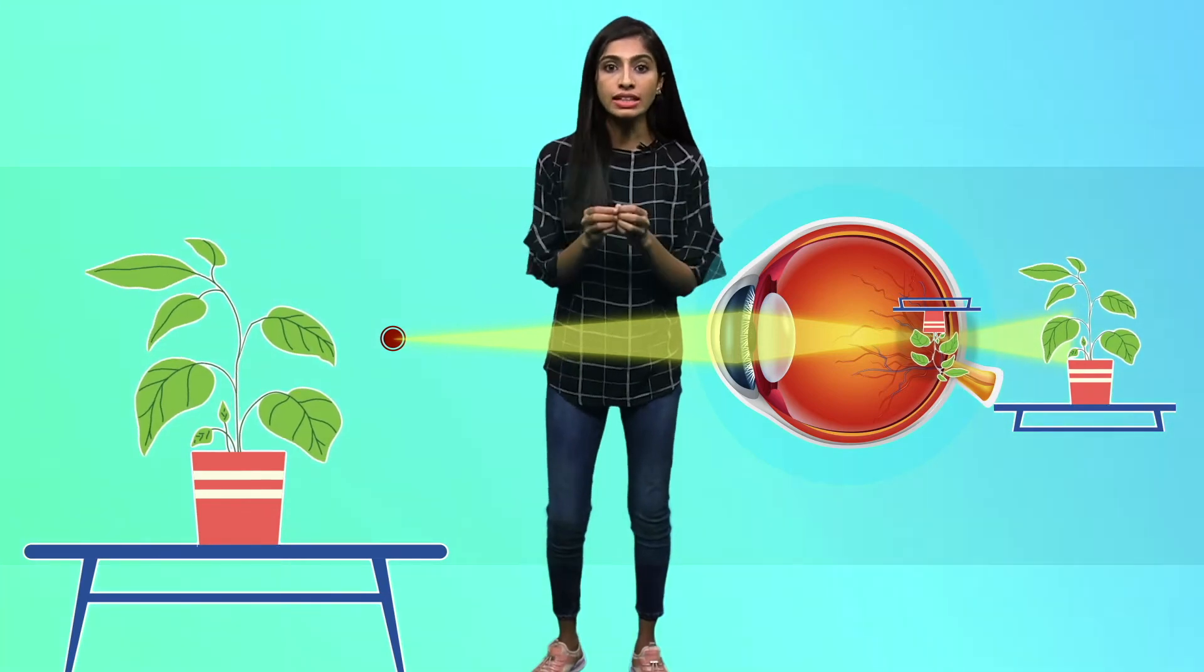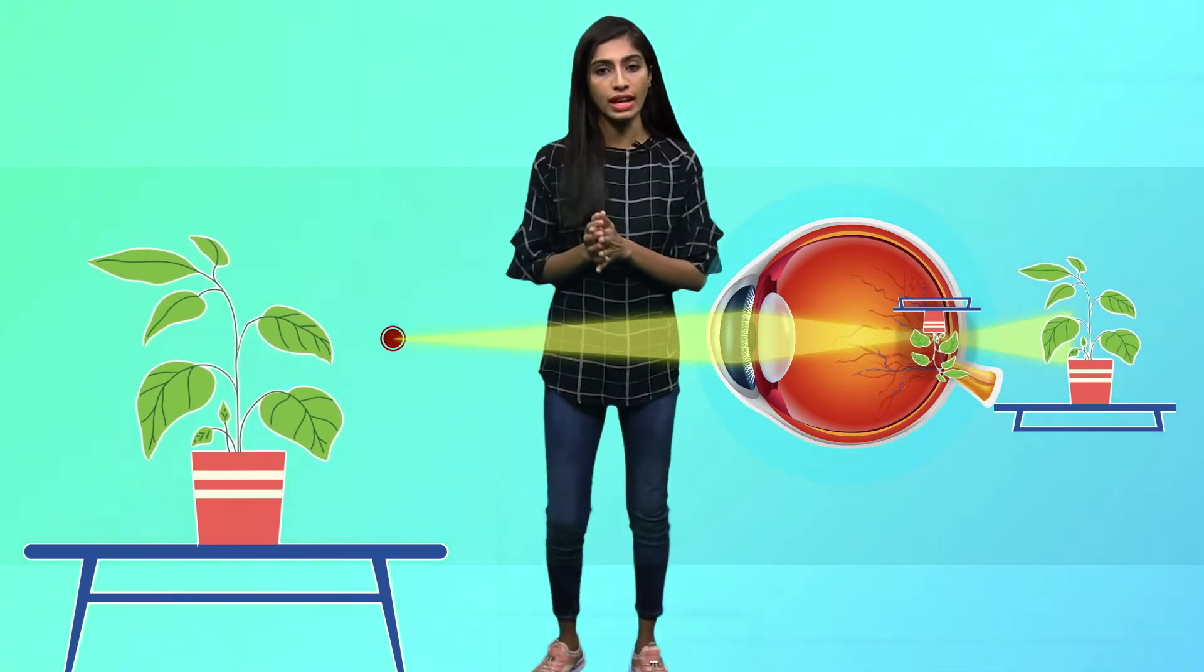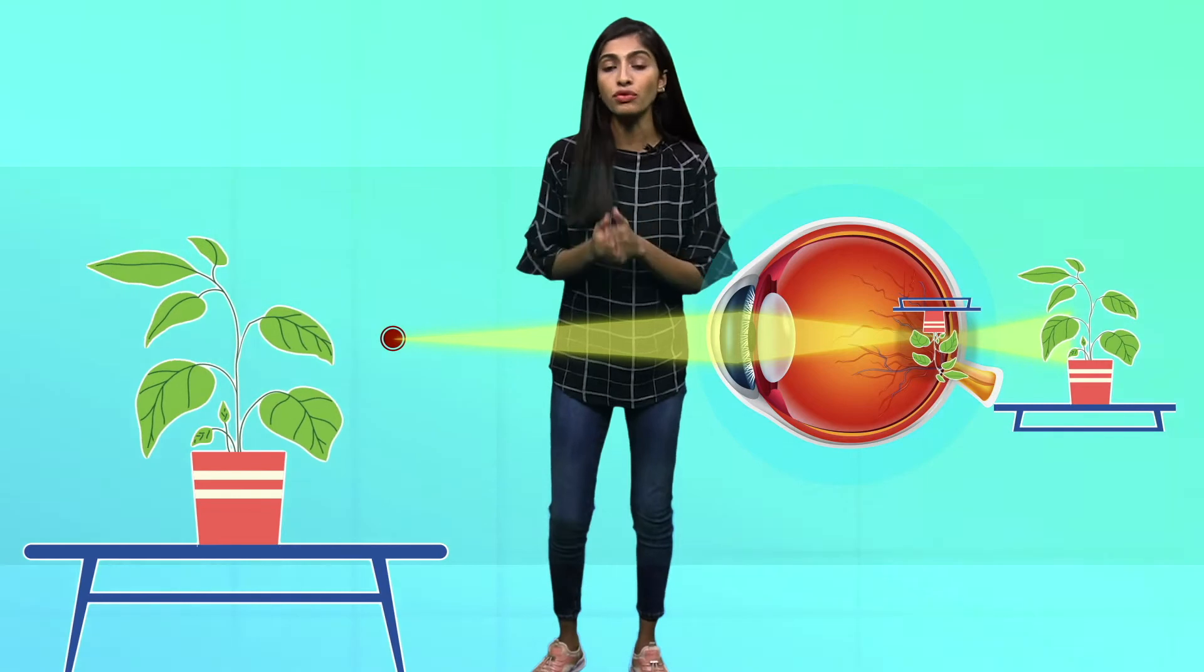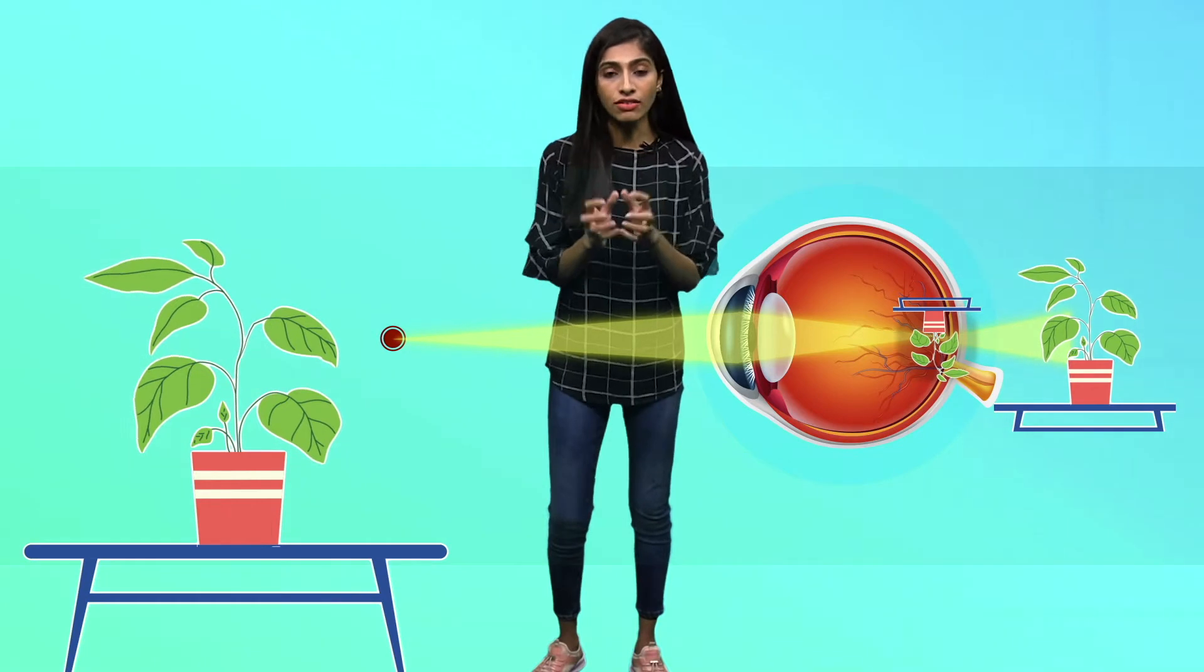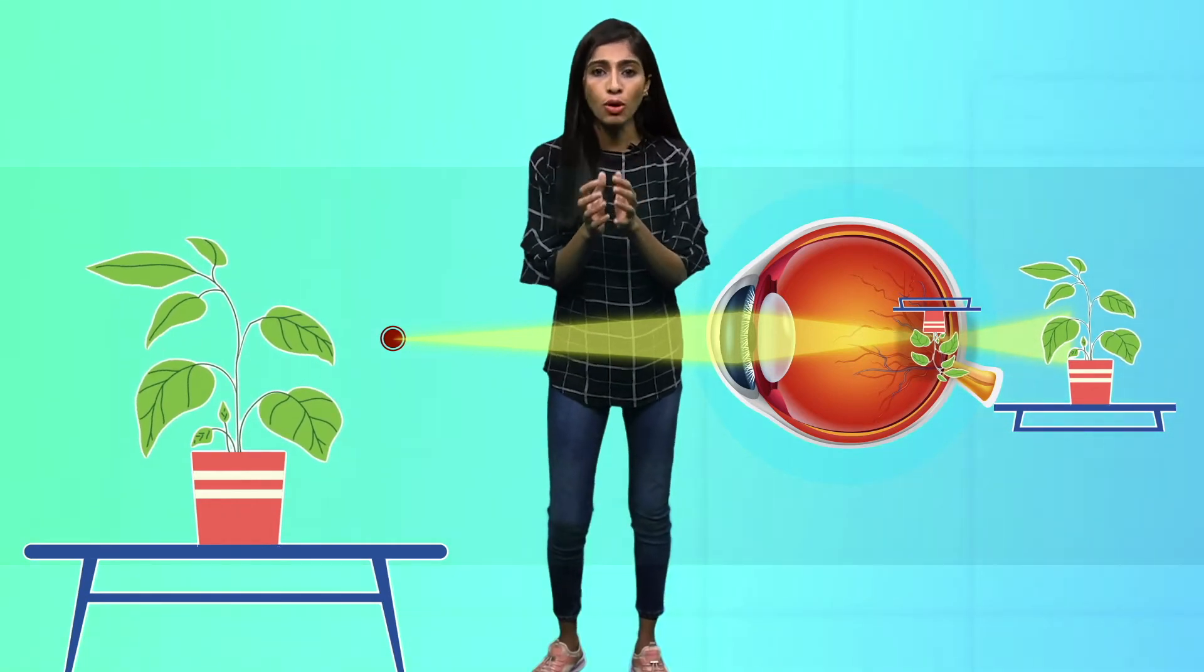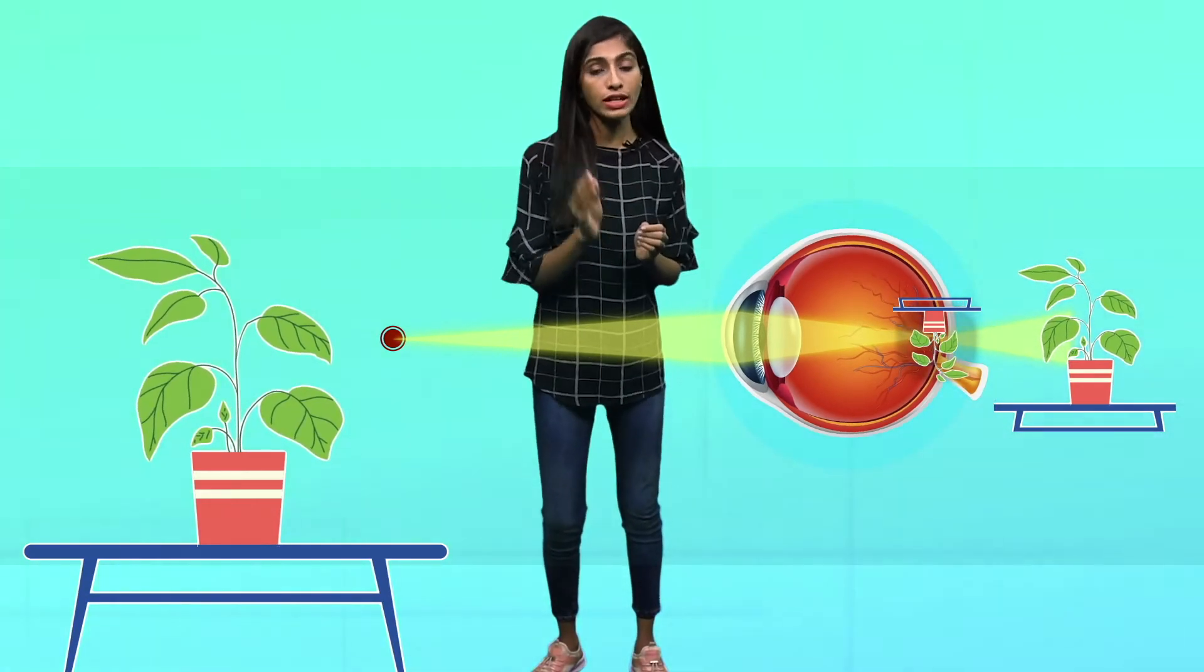This is due to the focal length of the lens. If the focal length of the lens becomes too long then this defect happens. And even if the eyeball becomes smaller then also this defect will arise.